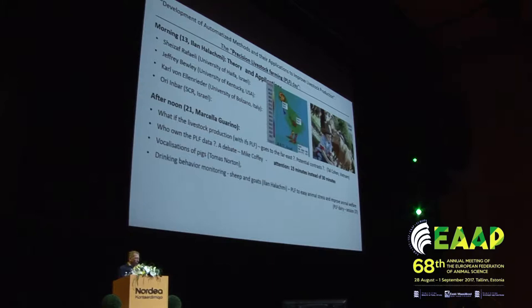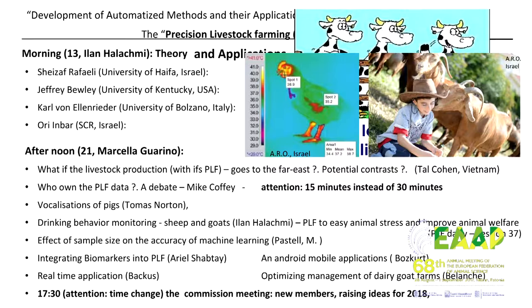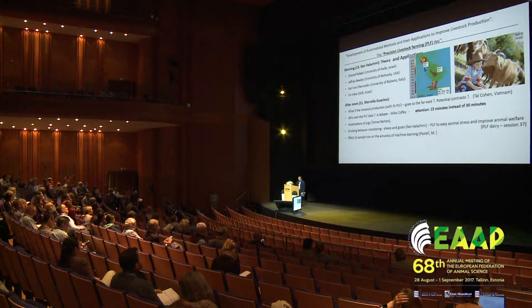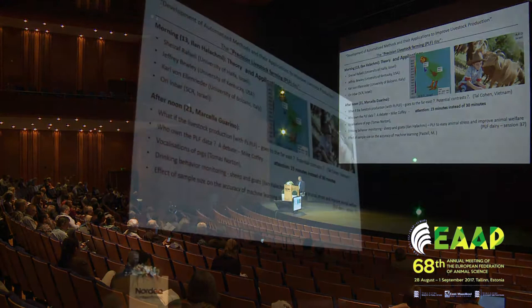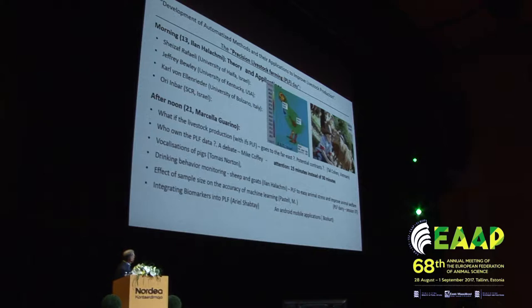The next presentation is Thomas Norton from Leuven, where we start with the real classic PLF studies. Before that, there's a presentation on sheep and goats, which I will present later — it's part of a larger project that also includes poultry and dairy, though the dairy will be in another session. Matti Pastel from Finland has great experience in PLF. I think we have worked in parallel for the last 20 years, not in the same consortium, but I know his work well. He's doing very good PLF, and the sample size is very relevant to all of us.